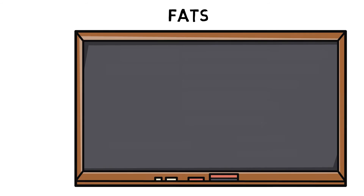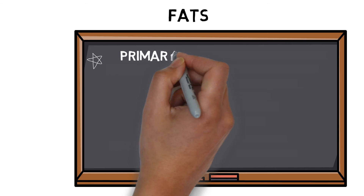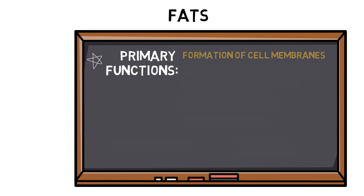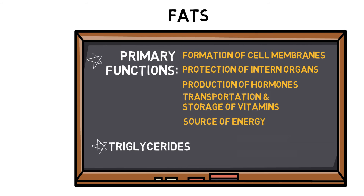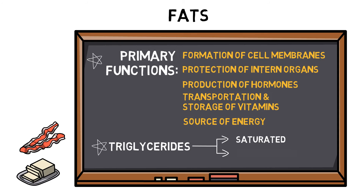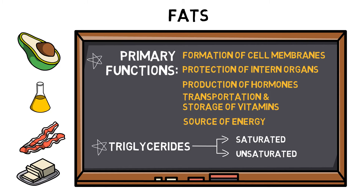Fat, despite some incredibly bad press, is an essential part of a healthy diet. Fats and oils belong to the lipids family and perform a number of important roles, including formation of cell membranes, protection of internal organs, production of hormones, transportation and storage of vitamins, and a source of energy. Triglycerides are three fatty acids attached to a glycerol backbone and can be divided up depending on their molecular structure: saturated fats, found in butter, lard and bacon; and unsaturated fats, found in fish, nuts, olive oil and avocados. Consuming too much of any fat may affect performance and body composition, as fats are high in energy but also contain lots of calories.